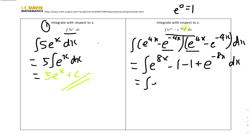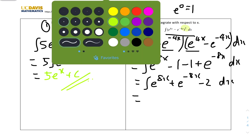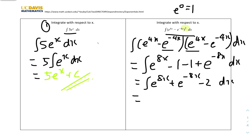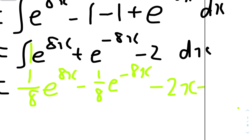We rewrite the expanded expression as e^(8x) + e^(-8x) - 2 dx and then integrate each term. For e^(8x), the derivative of the power is 8, so we get (1/8)e^(8x). For e^(-8x), the derivative of the power is -8, so the new coefficient is 1/(-8), giving (-1/8)e^(-8x). And -2 integrates to -2x. So the full answer is (1/8)e^(8x) - (1/8)e^(-8x) - 2x + c.